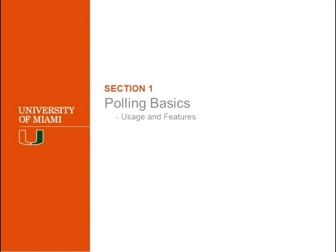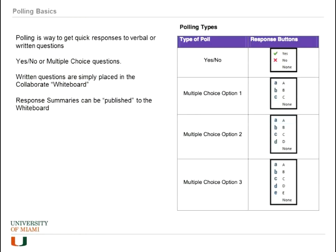Rick already got us started by talking about the most basic type of poll, which is the yes-no poll. Polling is basically a way to get quick responses to verbal or written questions. By default, yes or no is the option that Collaborate gives you. However, there are three types of multiple choice that you can also choose.